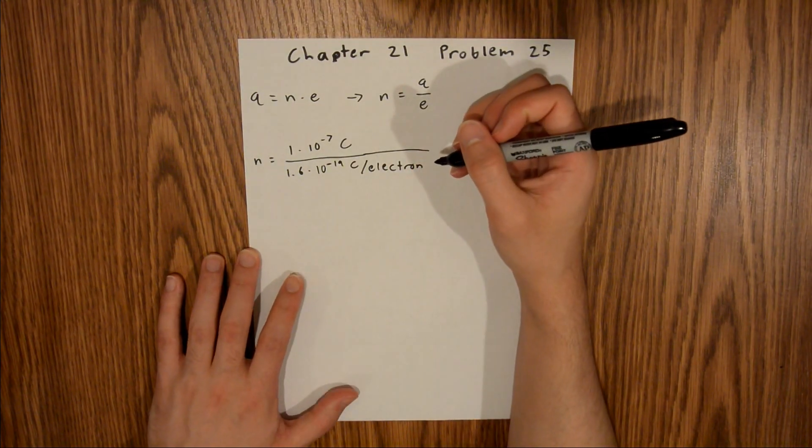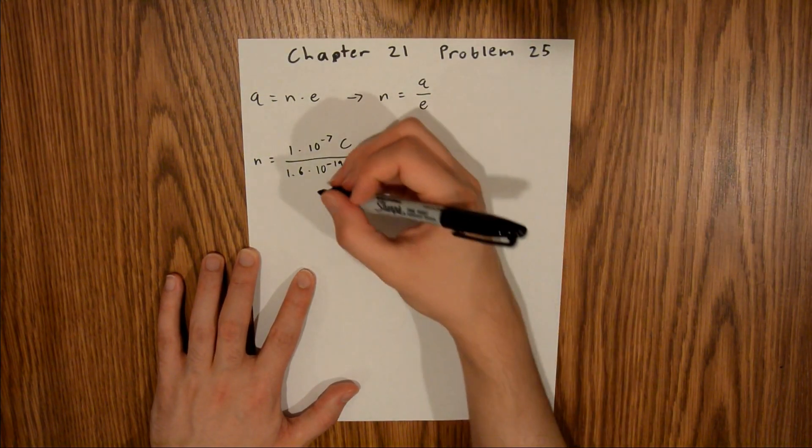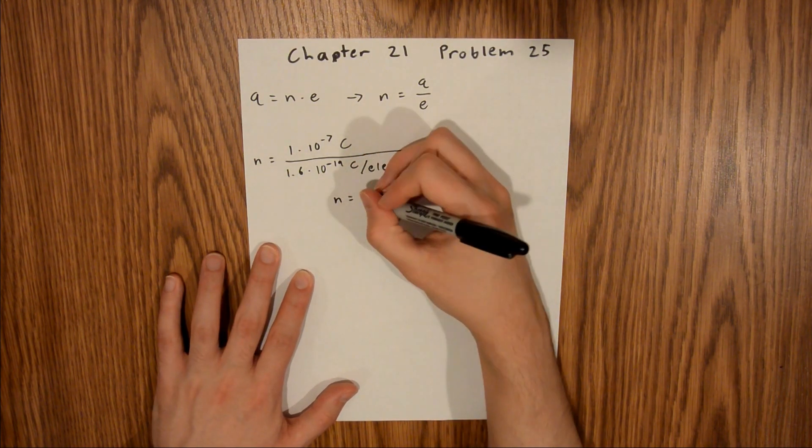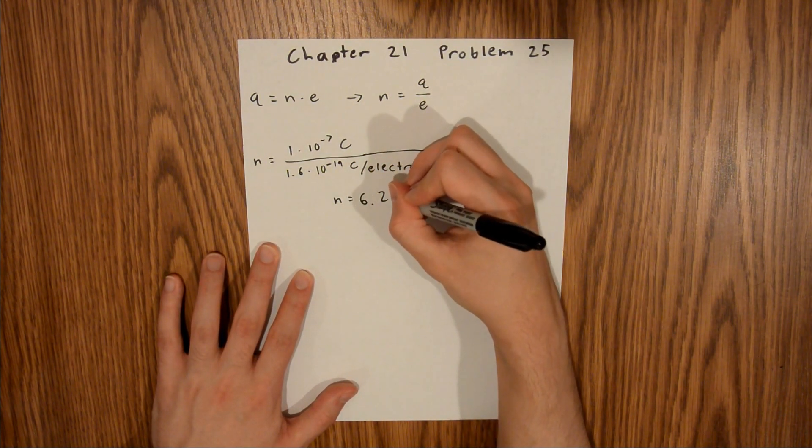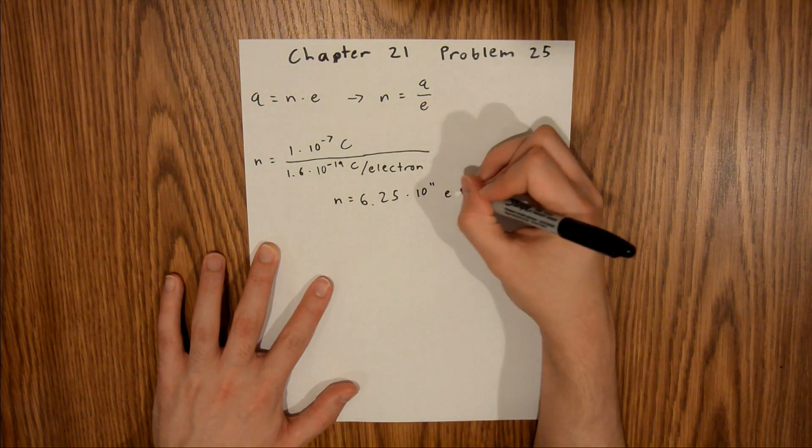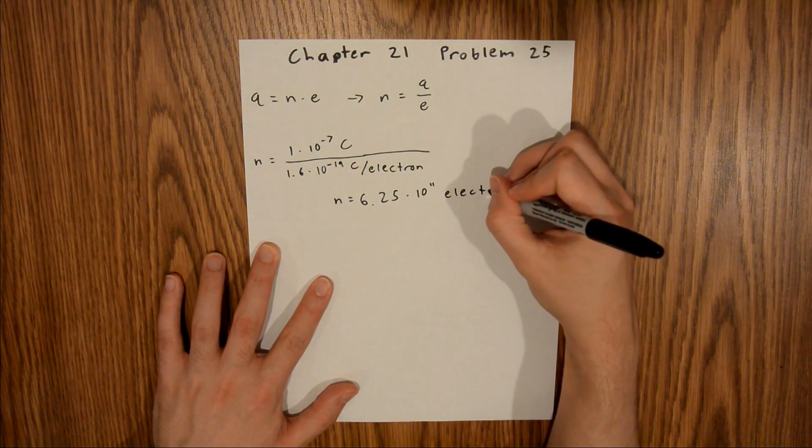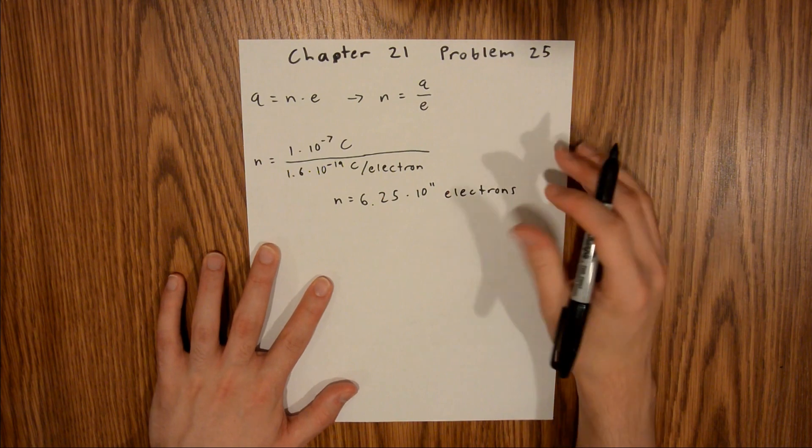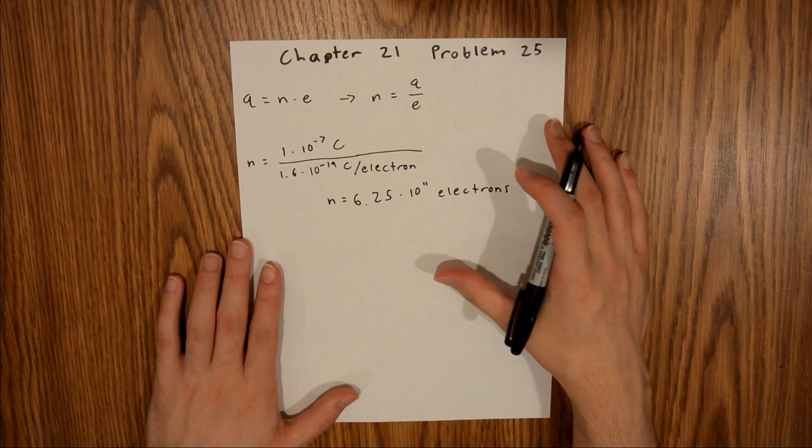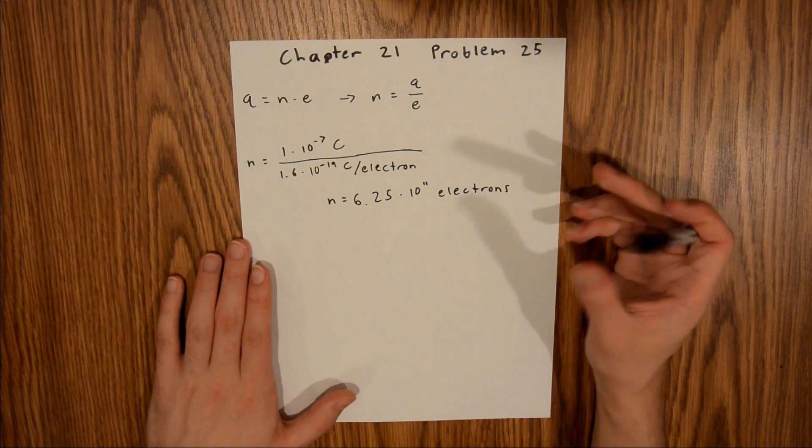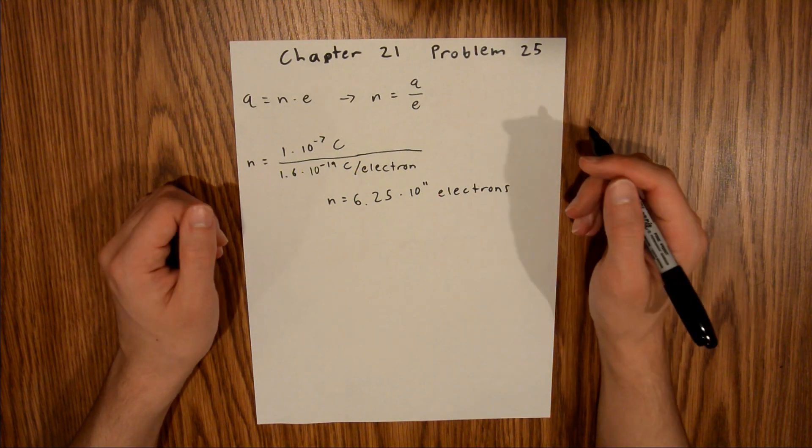If you plug that into your calculator, you will find that the number of electrons is equal to 6.25 times 10 to the 11th electrons. And that is the final answer to this problem.